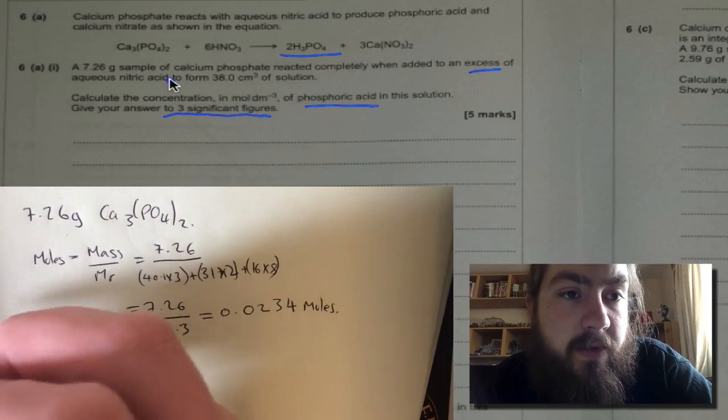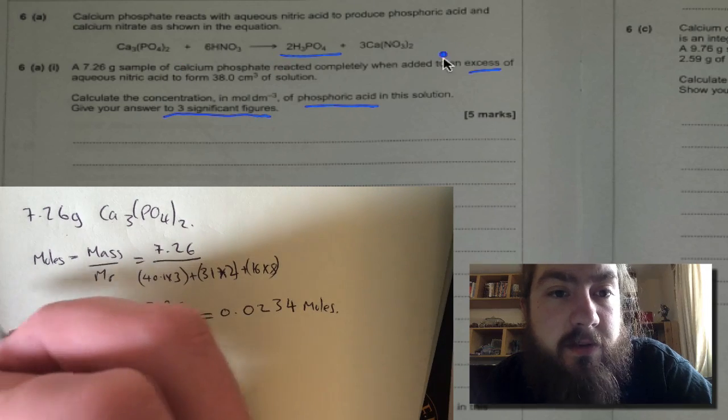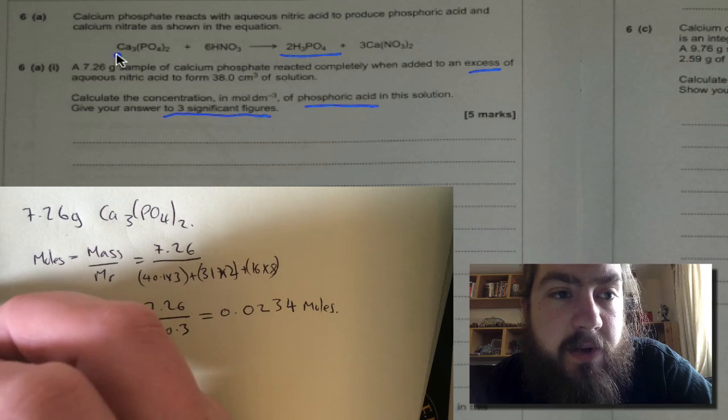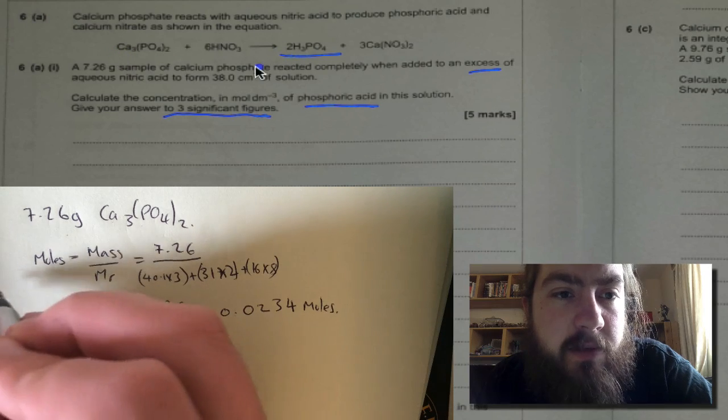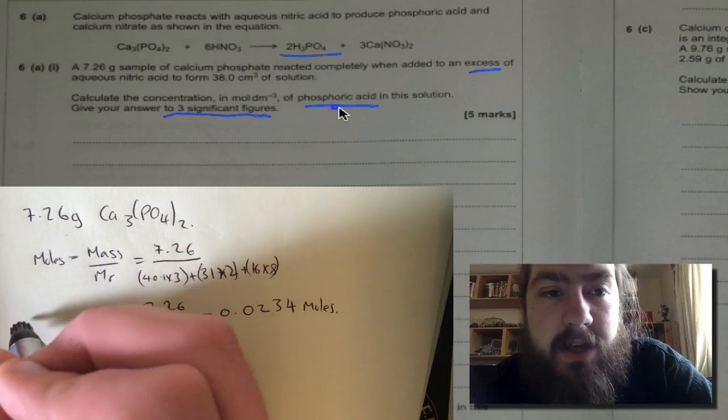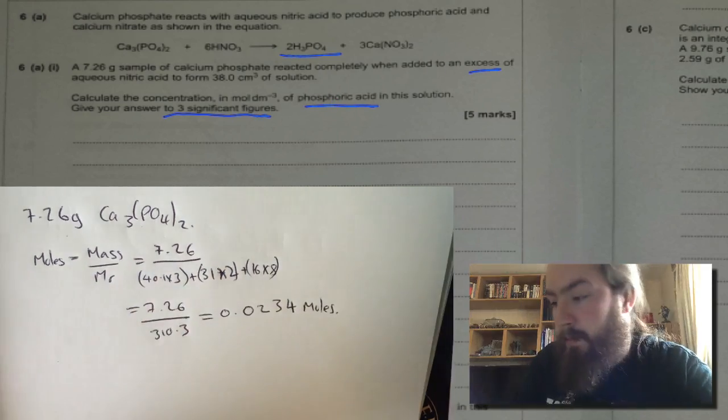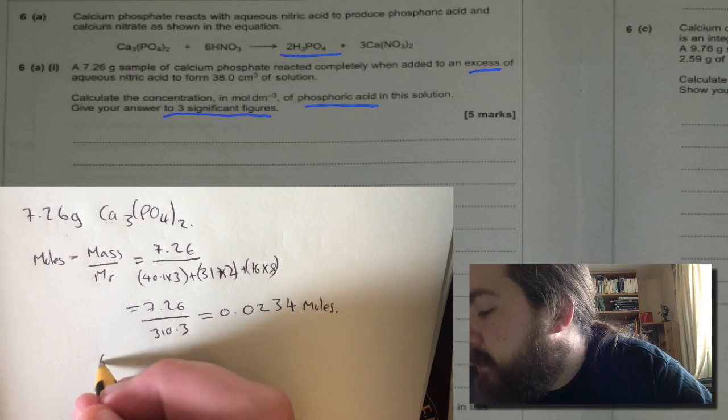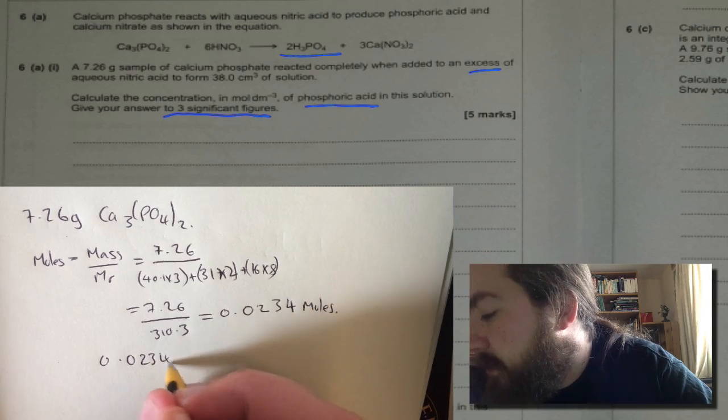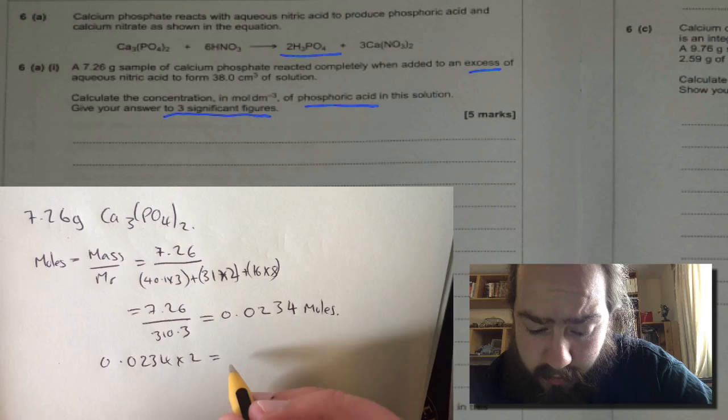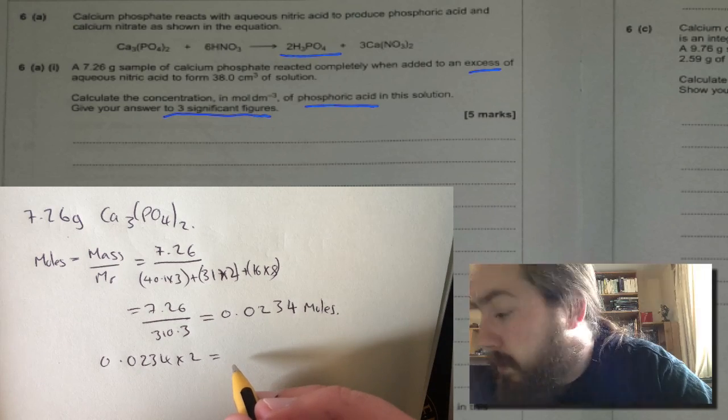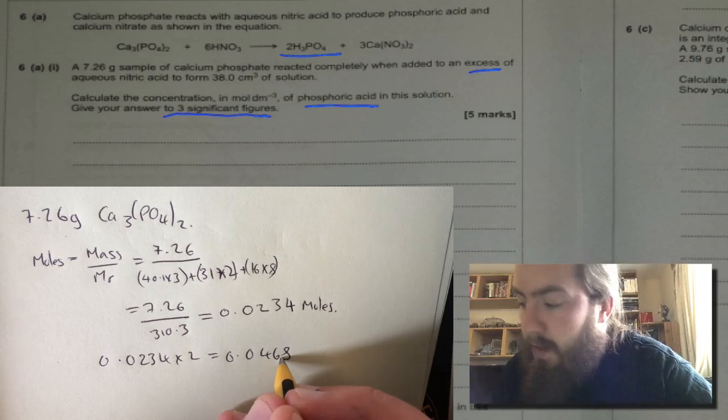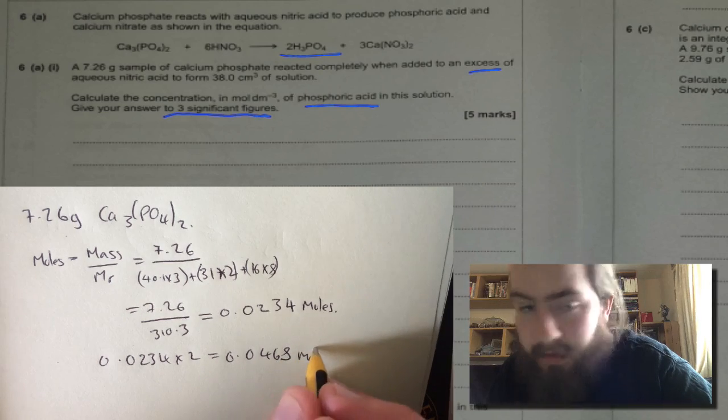That's the number of moles of calcium phosphate, not the number of moles of phosphoric acid. So what we need to do is look back to our equation. We've got no numbers here and we've got a 2 here, so to work out the number of moles of acid we need to times that number by 2. 0.0234 times 2 equals 0.0468 moles.